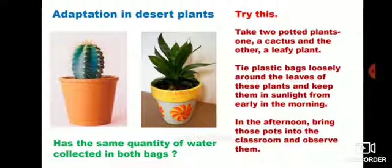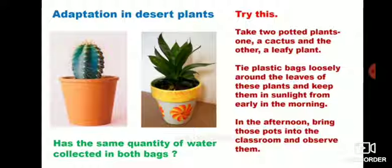Next, adaptations in desert plants. There is one activity for you to try. Take two potted plants - one a cactus and the other a leafy plant. Tie plastic bags loosely around the leaves of these plants and keep them in sunlight early in the morning. In the afternoon, bring those pots into the classroom and observe them. Has the same quantity of water collected in both bags? The answer is no - the leafy plant has more water drops because of the evaporation of water.